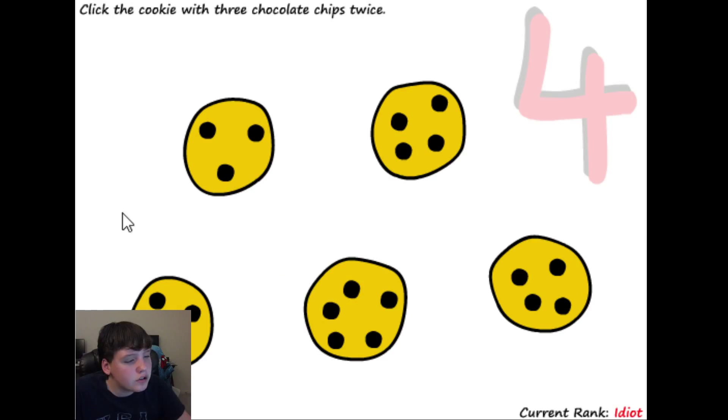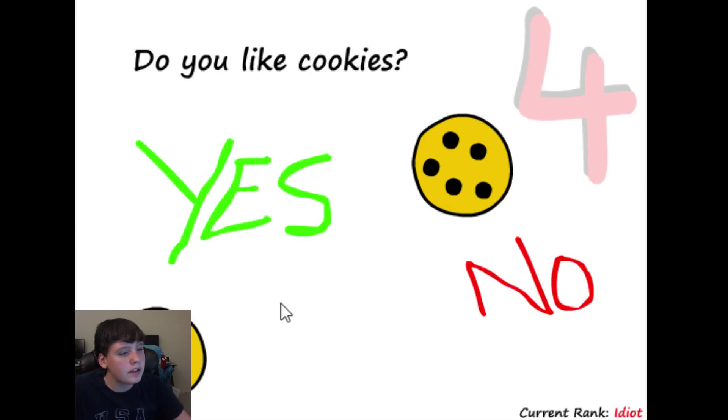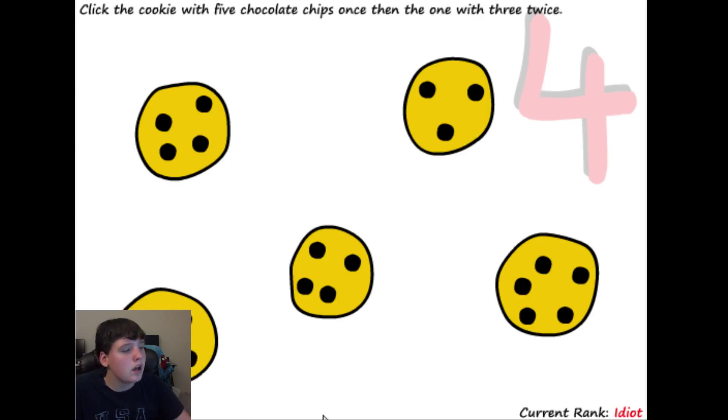Click the cookie with three chocolate chips twice. There we go. Do you like cookies? Yes. Alright. Click the cookies with five chocolate chips once, then the one with three... Alright. Five chocolate chips once. Okay. I got it. Or three twice.